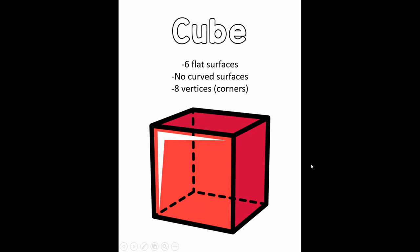The next 3D shape is called a cube. Can you say cube? A cube has six flat surfaces — we can see one at the top, one at the bottom, and then four around the sides of the shape.